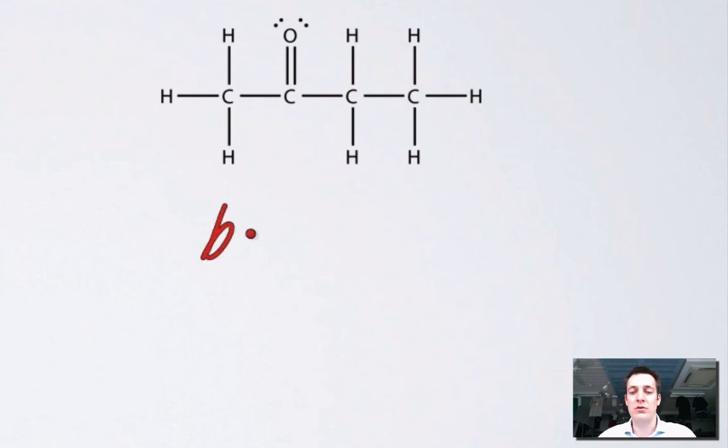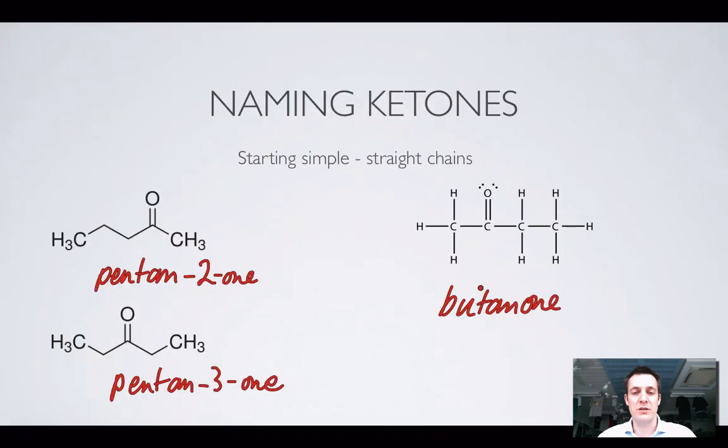I could call it butan-2-one, but if you think about it, it can't be anywhere else because if it was on the third carbon, it would just be butan-2-one again. If it was on the end, it wouldn't be a ketone—it would be an aldehyde. So there's no need to specify where this particular ketone is.